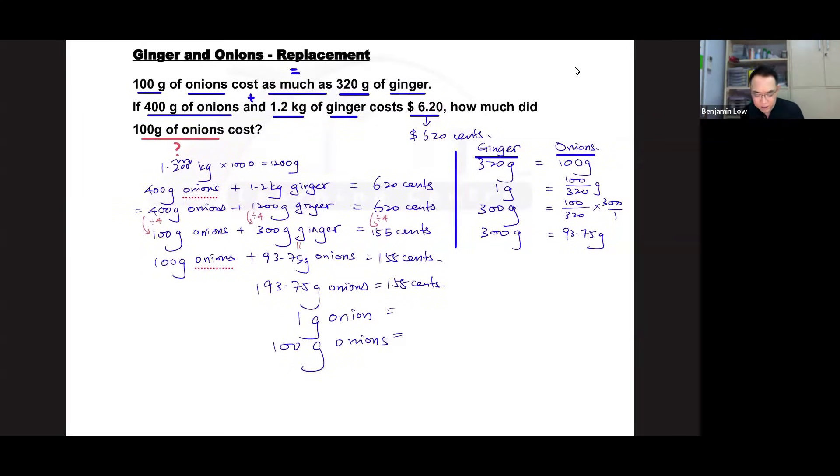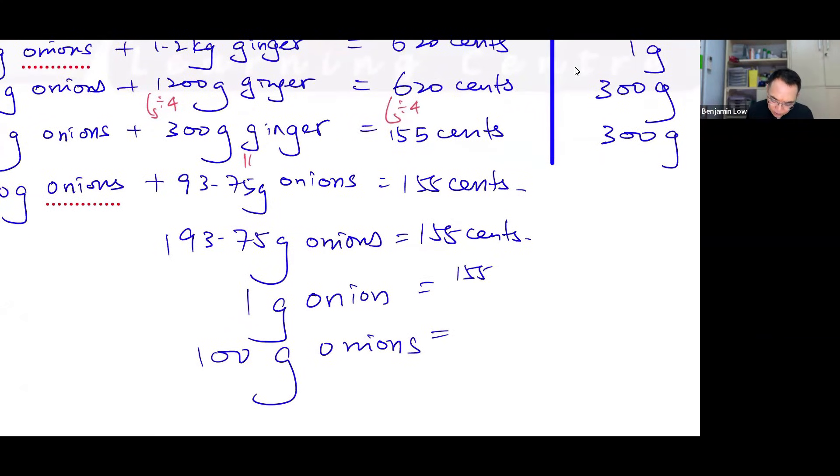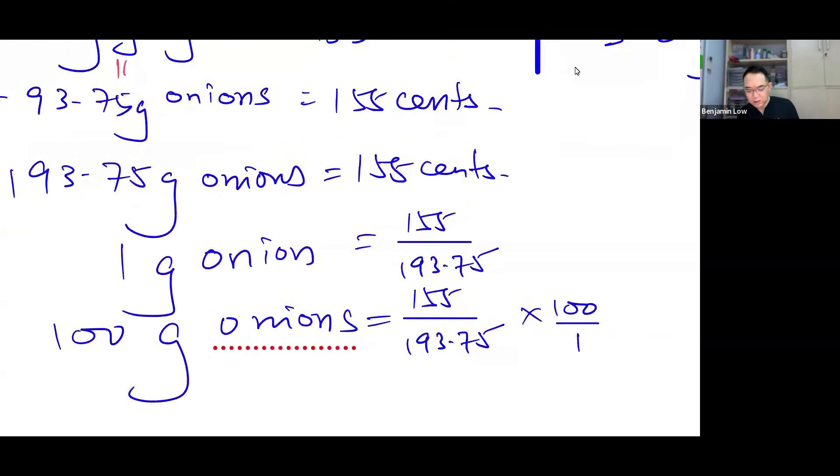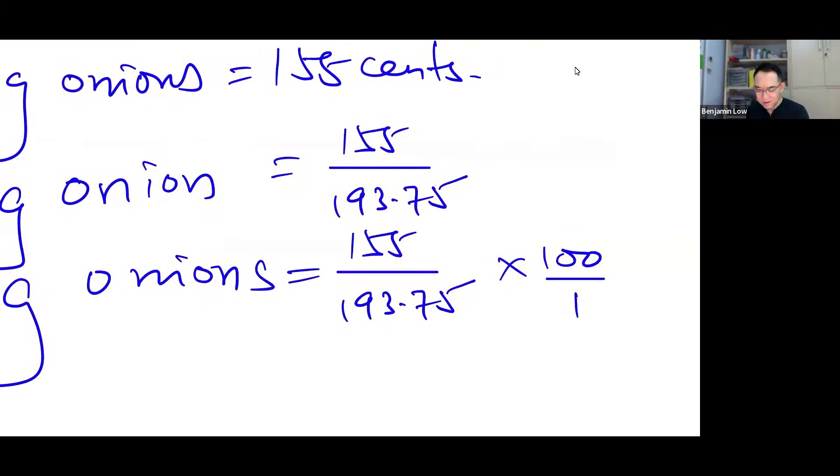So this part, I'm pretty sure you are familiar. The working is 155 over 193.75. I'm just going to copy and paste this because I want to show you that it's from here. So this is the same number multiplied by 100 grams. My students always say that I cheat and I'm lazy. I'm trying to show you. Anyway, 155 divided by 193.75 and multiplying this by 100 will give me 80 cents.